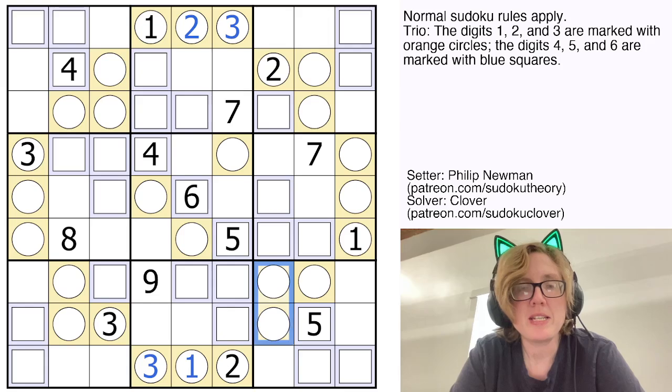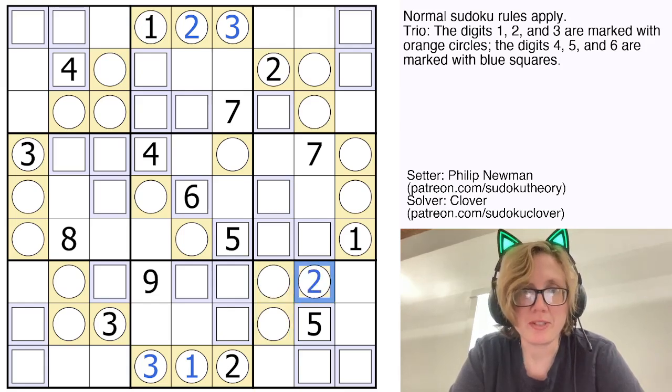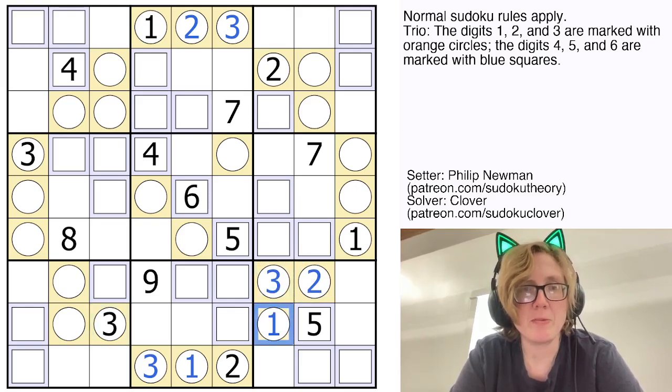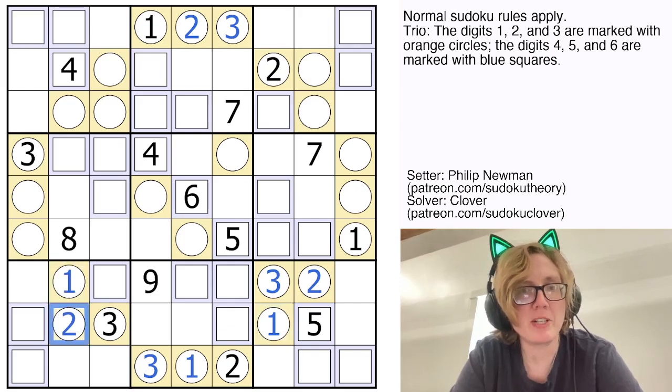This 2 sees these two cells, so the 2 has to be in the one remaining orange circle here, so it'll go right there. And then this 3 places a 3 there and a 1 there. And then the one I just placed will give me a 1 and a 2.